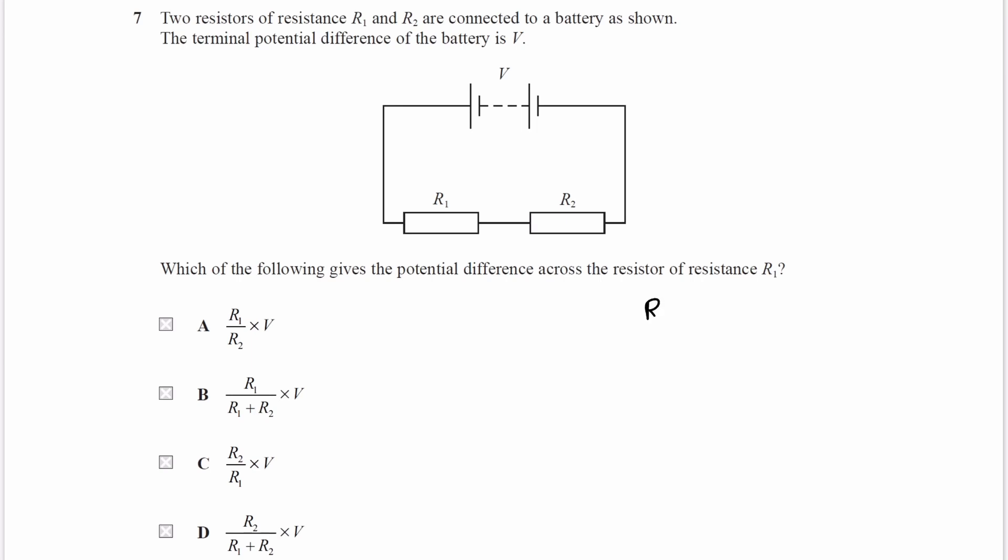So if we work out or get an expression for the fraction of resistance that R1 represents, that will be R1 divided by the total resistance R1 plus R2. You add them because they're in series, and that's how you add resistance for resistors in series.